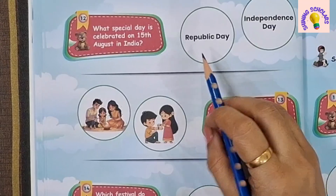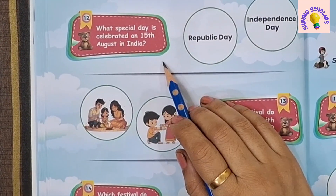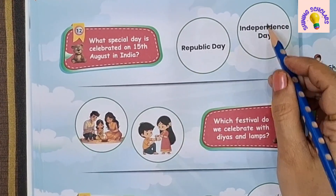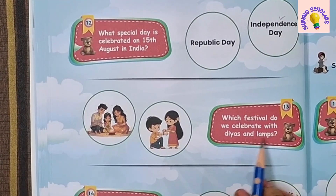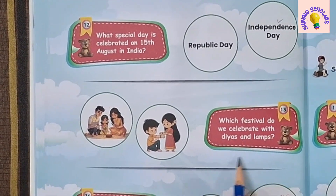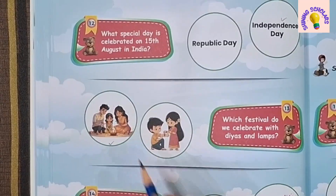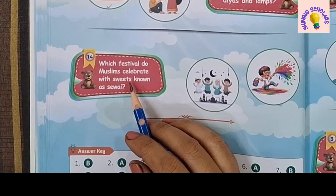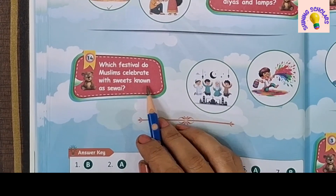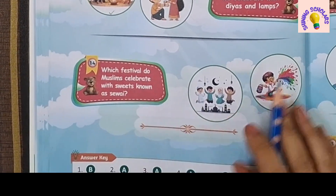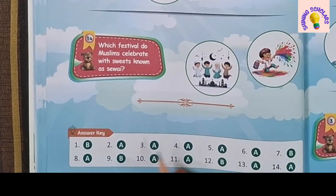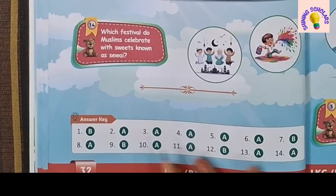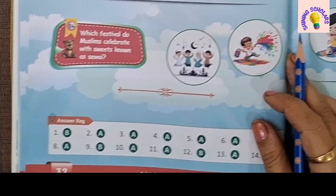What special day is celebrated on 15th August in India? It's Independence Day. Which festival do we celebrate with diyas and lamps? Diwali. Which festival do Muslims celebrate with sweets known as sevayi? Eid. And at last is the answer key — you can match your answers.